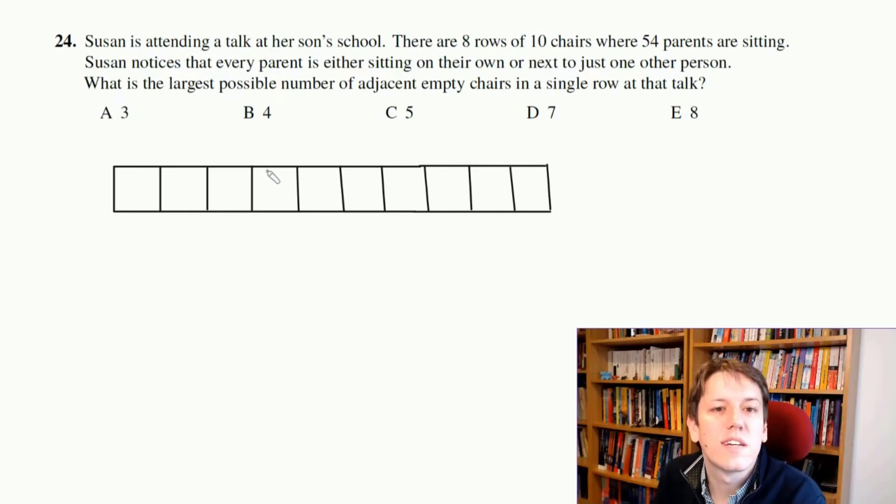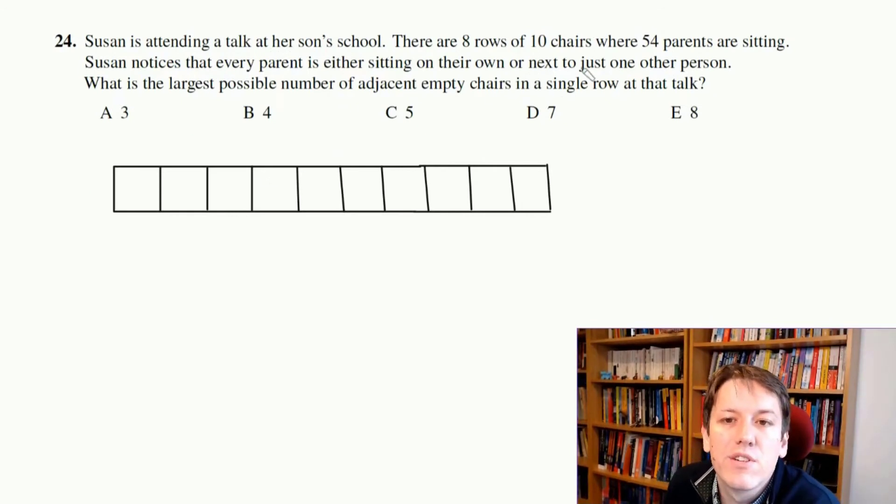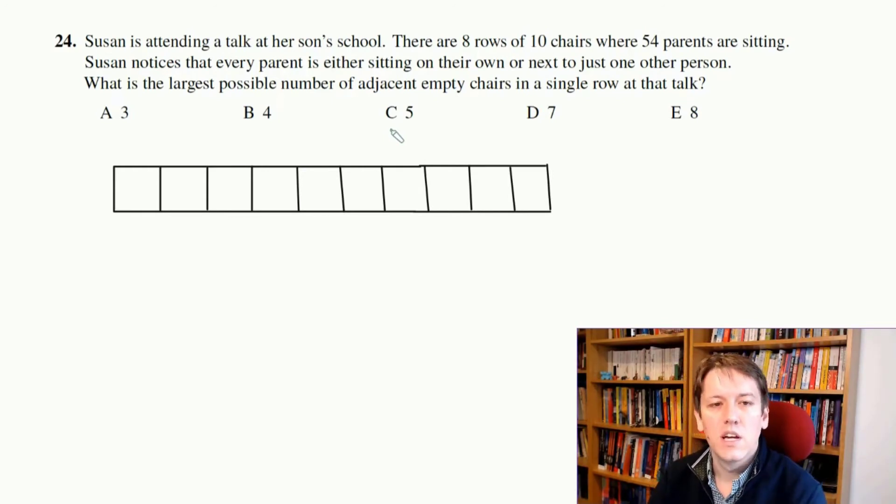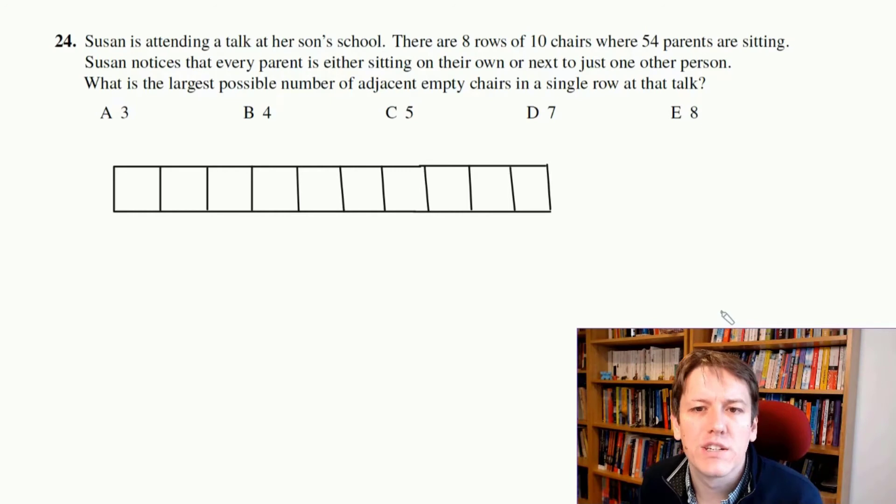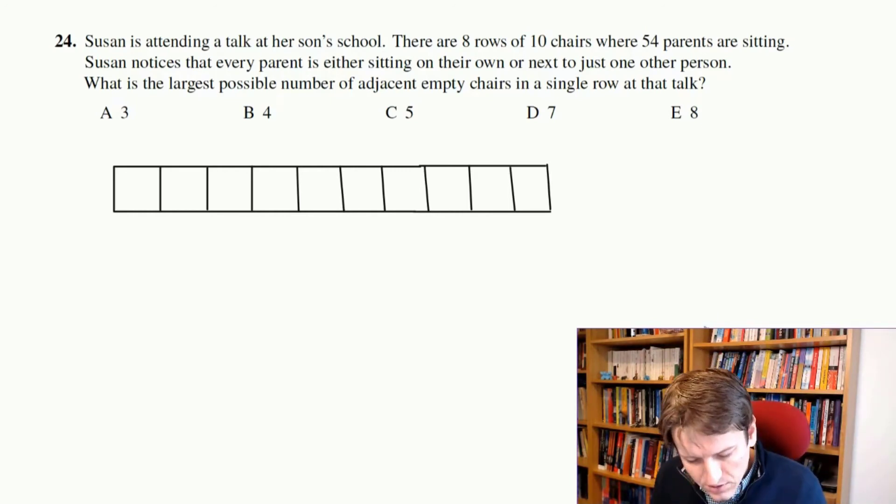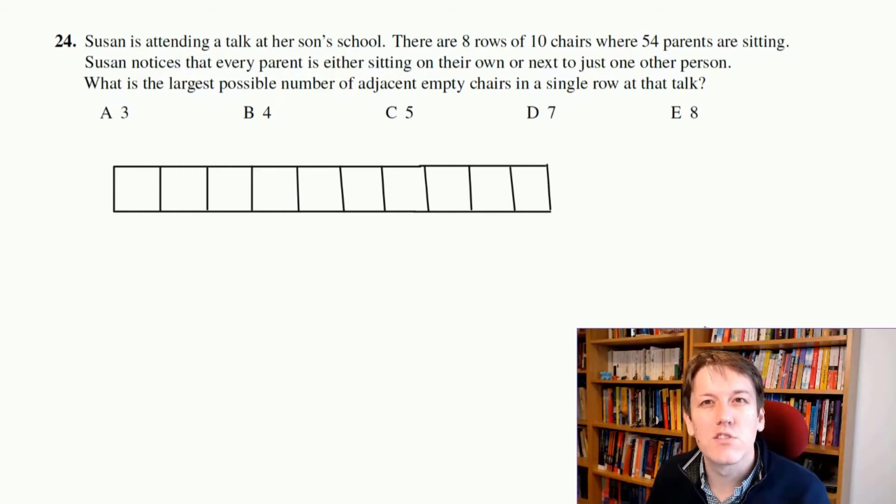Okay, so it says Susan's attending a talk at her son's school, where eight rows of 10 chairs where 54 parents are sitting. She notices every parent is either sitting on their own or next to just one other person. What's the largest possible number of adjacent empty chairs in a single row at that talk? So this is one of those sort of problems where we're always just trying to like stretch the situation to give like the worst or the best case scenario, depending how you're thinking about it, right?